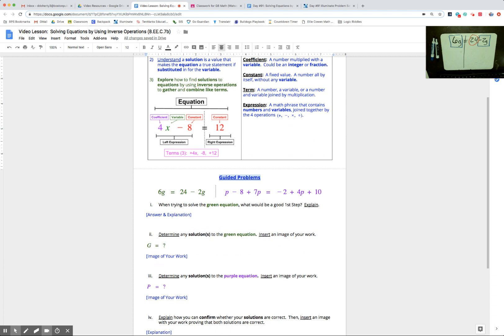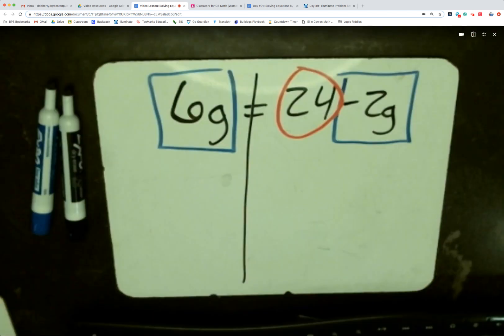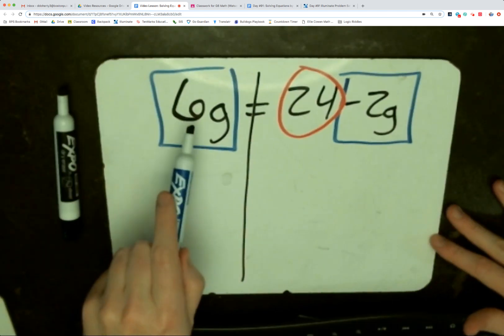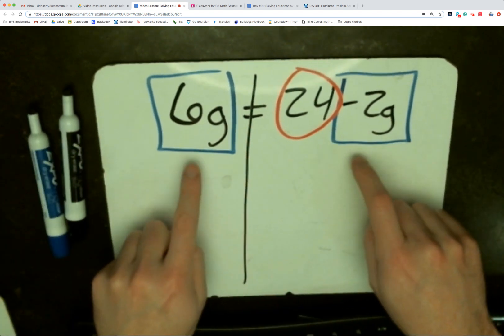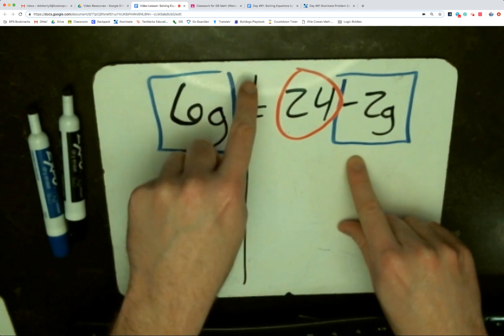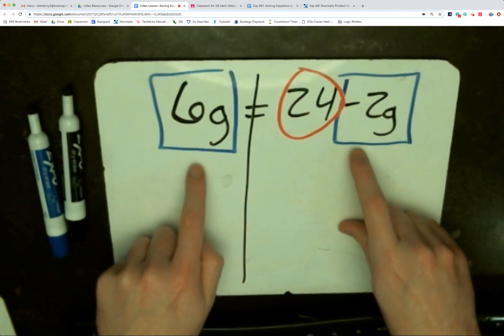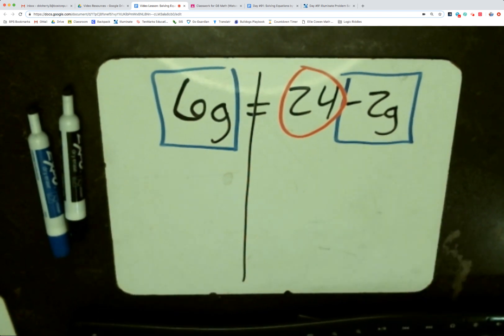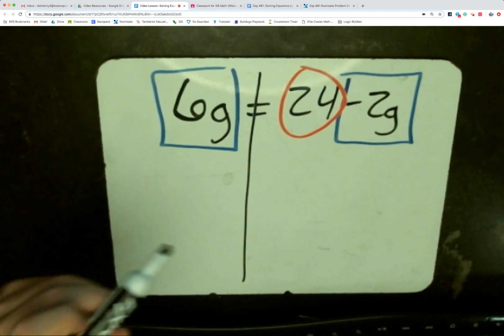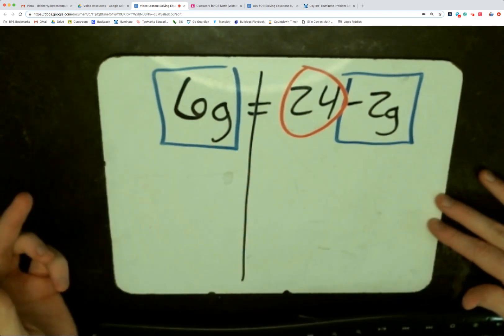So think about what am I going to do when trying to solve this green equation? What would be a good first step as I'm taking a look at it? Pause the video. Welcome back. Hopefully what you recognized: a good first step, because I have two variable terms, 6g in the blue box, negative 2g in the other blue box, and because they're on opposite sides of the equation. This is one of the reasons I draw the river straight down through my equal sign. When they're on opposite sides, I can't combine them yet. I need to use an inverse operation to get them together.